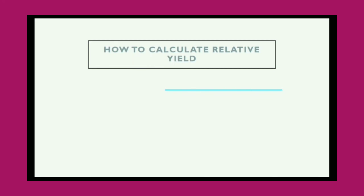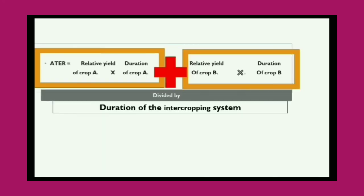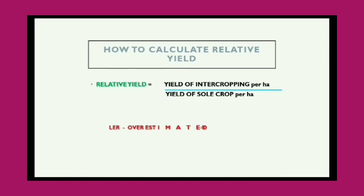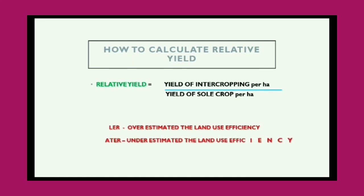This is all about calculating the relative yield — putting this value into relative yield of crop A, multiplying it by the duration, then adding both values together and dividing by the total duration of the complete intercropping system. That is how we get the Area Time Equivalent Ratio value. This is very important for master's students and for those desiring to go for higher studies and doctorate programs. Please be careful while calculating yields, relative yields, and crop durations.